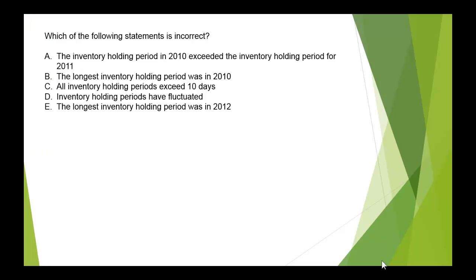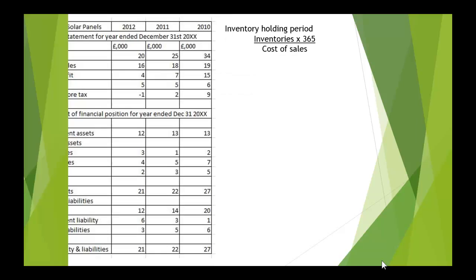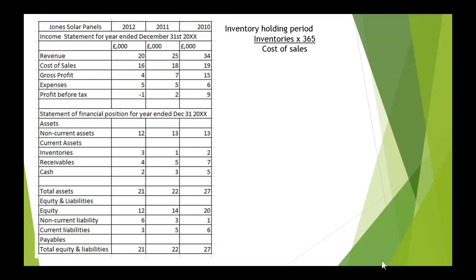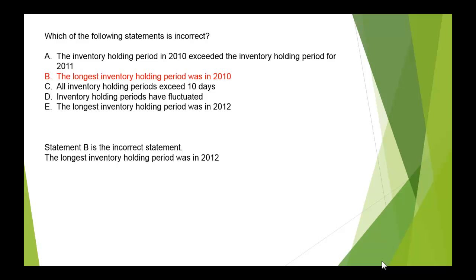Here's another question — but note the slight difference in phrasing: which of the following statements is incorrect? With multiple choice questions you must watch out for this, as we're looking for an incorrect statement rather than a correct one, and more than one may be incorrect. We're looking at inventory holding periods: inventories multiplied by 365 divided by cost of sales. For 2012 it's 68 days, for 2011 it's 20 days, and for 2010 it's 38 days. So 2011 was the lowest and 2012 was the highest.